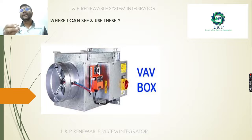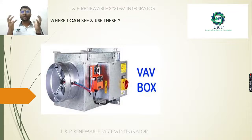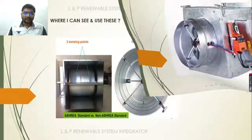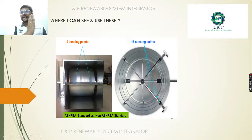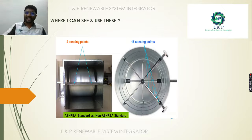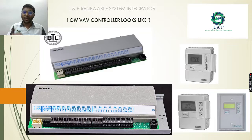This is a typical photo of the VAV box — this is how it looks. Based on our requirement we can change the box sizes and the volume. These are the air flow sensing sensors present at the front on the supply side. From these sensors we connect to our application specific terminal controllers.